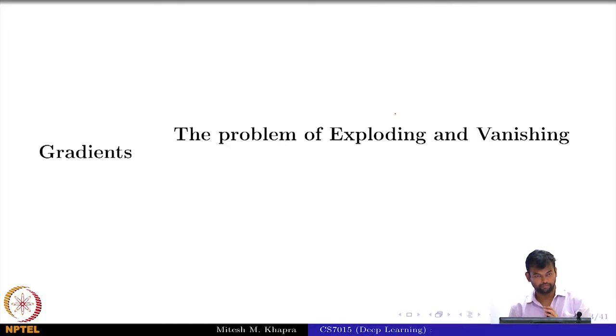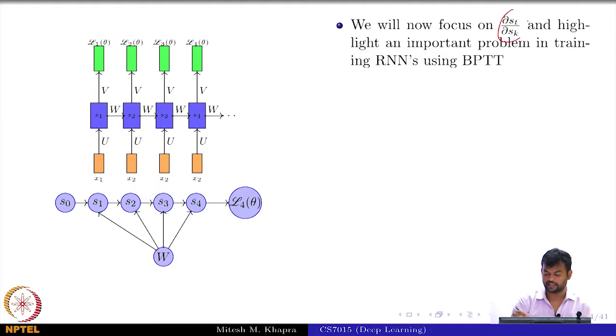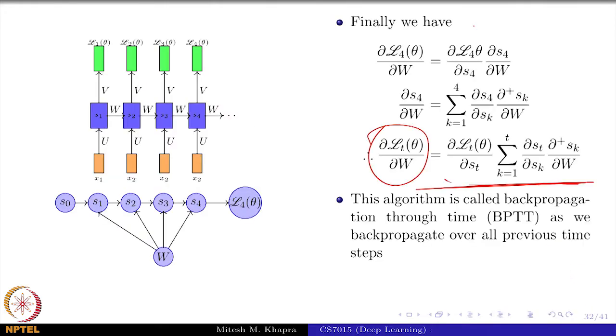And that takes us to the problem of vanishing and exploding gradients. You want to see what is the problem with this backpropagation through time which could lead to certain interesting situations. So, we will focus on this ∂s_t/∂s_k and let me just go back.